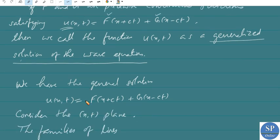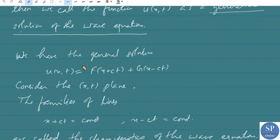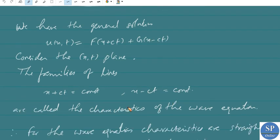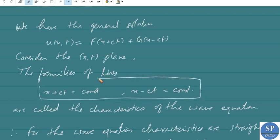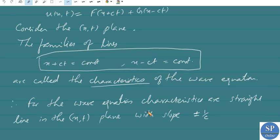Now, considering the general solution u(x,t) = f(x+ct) + g(x-ct) in the x-t plane: we look at the characteristics of the wave equation. The characteristics of the wave equation are x+ct = constant and x-ct = constant. For the wave equation, the characteristics are straight lines in the x-t plane with slopes ±1/c.